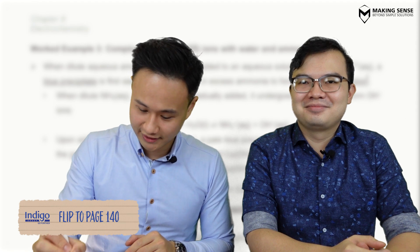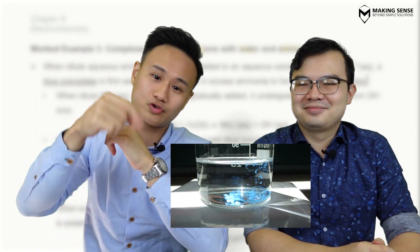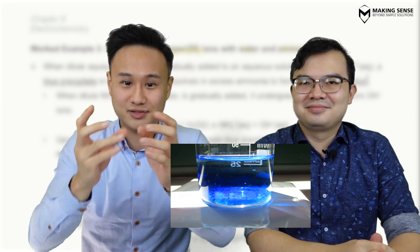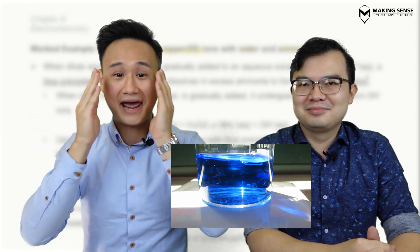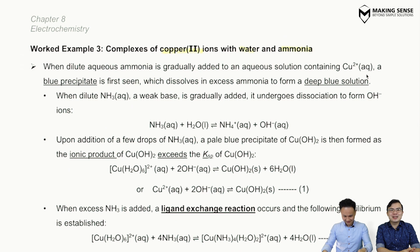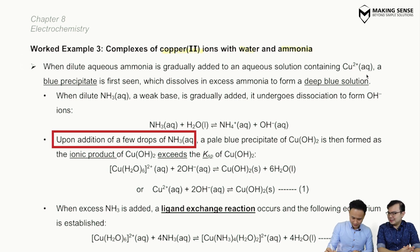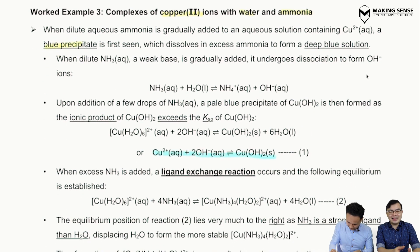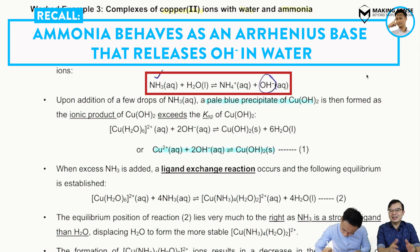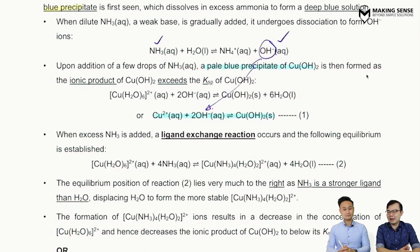Worked example three covers complexes of Cu2+ with water and ammonia. Recall from qualitative analysis: adding a few drops of aqueous ammonia to Cu2+ gives a light blue precipitate — copper hydroxide, Cu(OH)₂. Even though ammonia is added, the hydroxide comes from ammonia acting as a weak base, dissociating in water to release small amounts of OH⁻, which then reacts with Cu2+ to give the light blue precipitate.